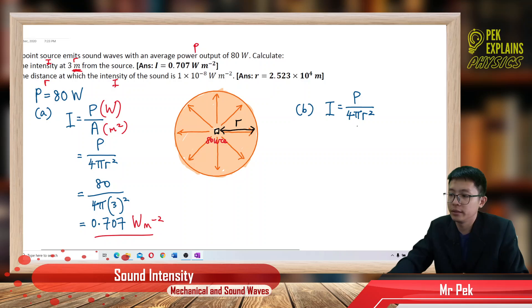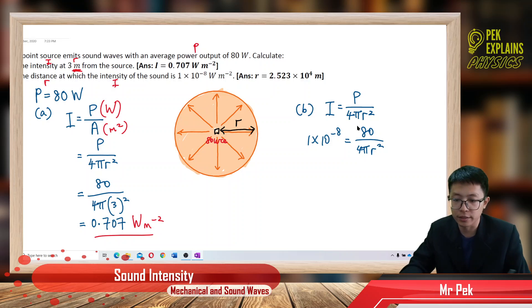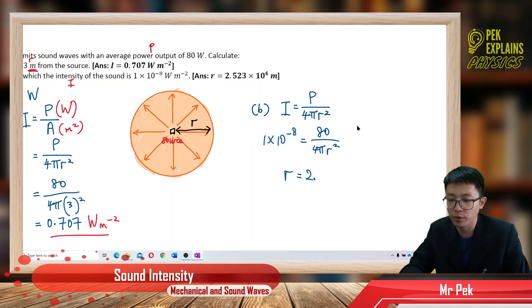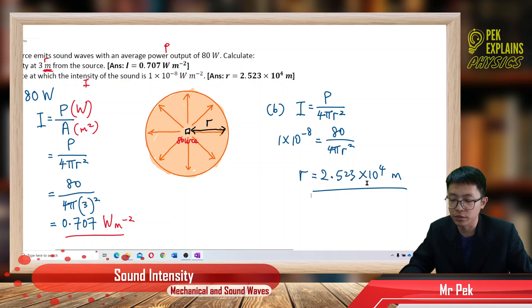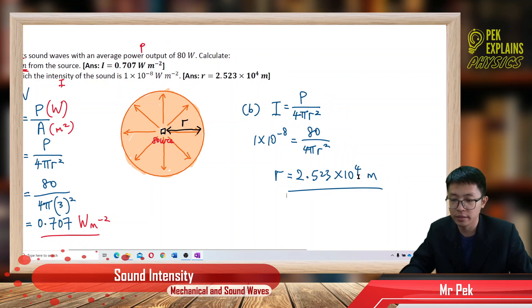Just put your intensity there. 1 exponent negative 8. Everything in SI unit. My power is 80. 4 pi R square. So, my R square root, I get answer 2.523 exponent 4 meter. I am this far away. This far away from the source. This is the distance.